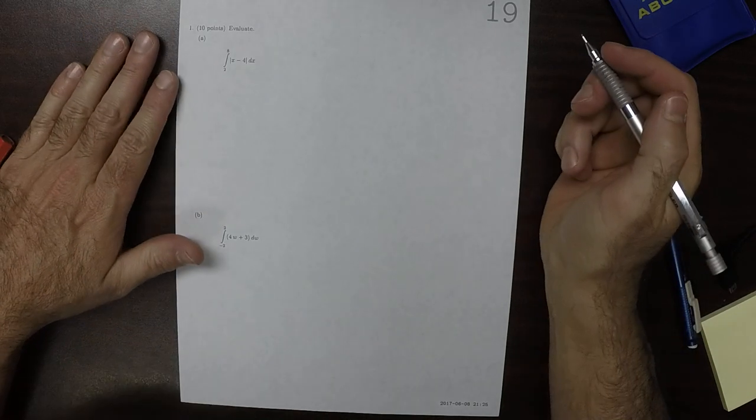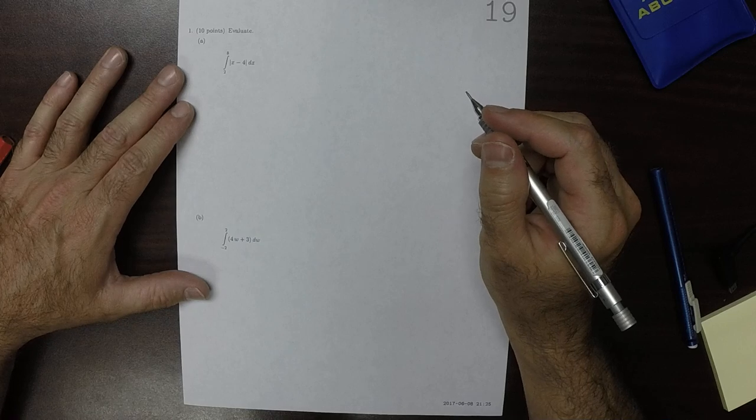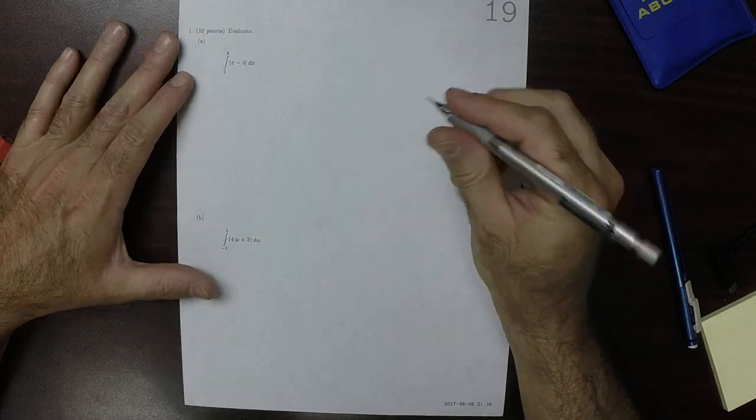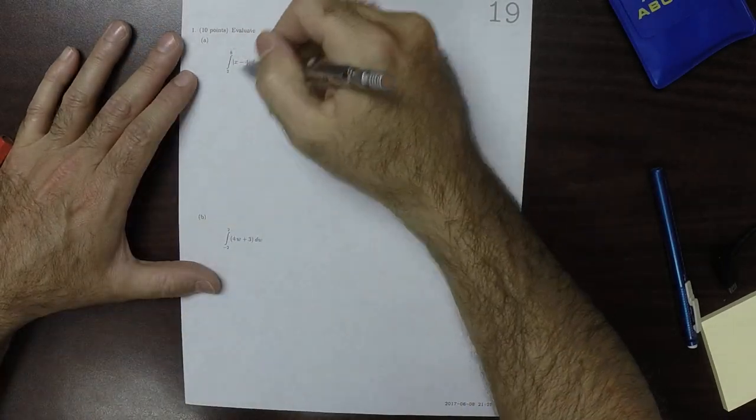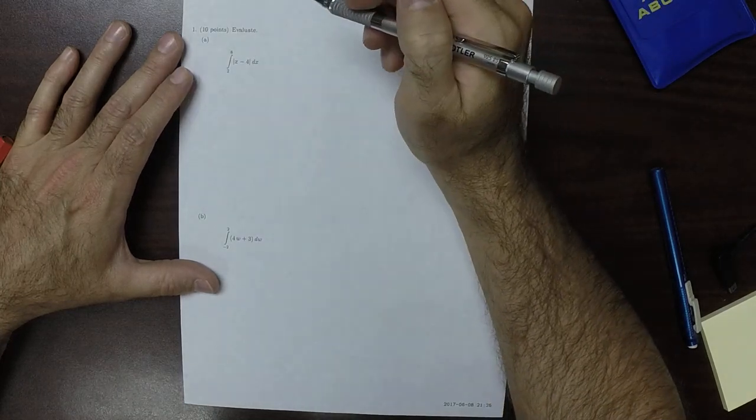This is the solution to written homework 19. We're asked to integrate this absolute value function, but we don't know any antiderivative.